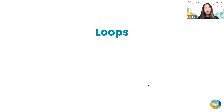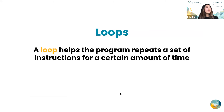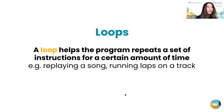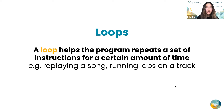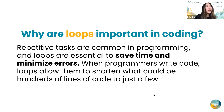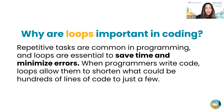Your second level will be about loops. A loop helps the program repeat a set of instructions for a certain amount of time. A few examples would be like replaying a song on Spotify when you click the button that repeats it over and over, or running laps on a track — just doing an action multiple times. Loops are important because repetitive tasks are really common in programming, and loops are helpful for saving time, minimizing errors, and minimizing the amount of code you have to write. They allow programmers to shorten what could be hundreds of lines of code to just a few.